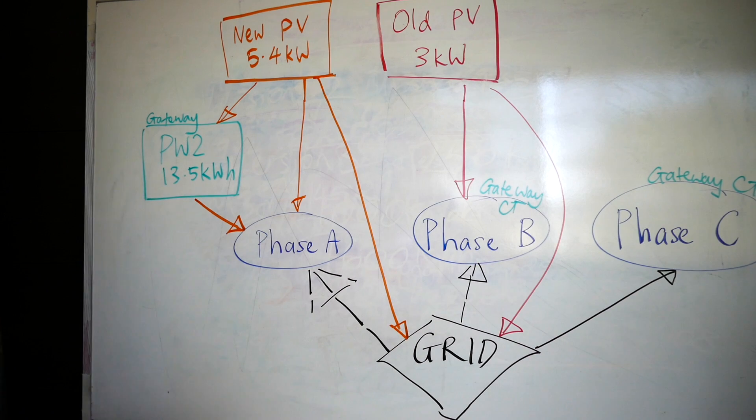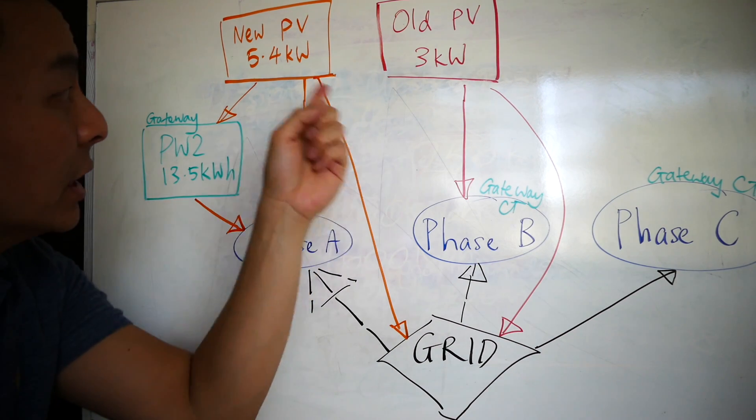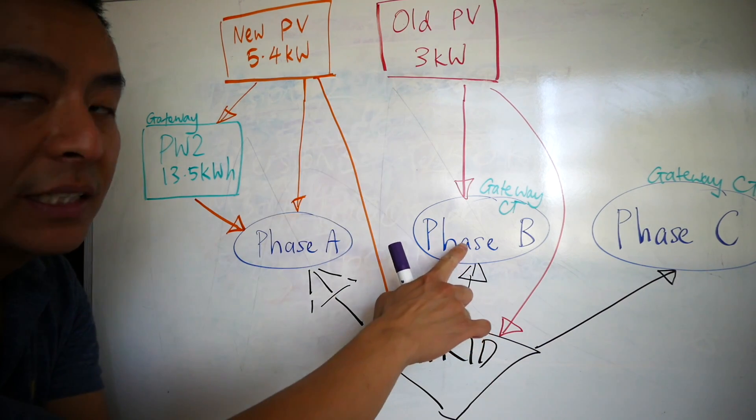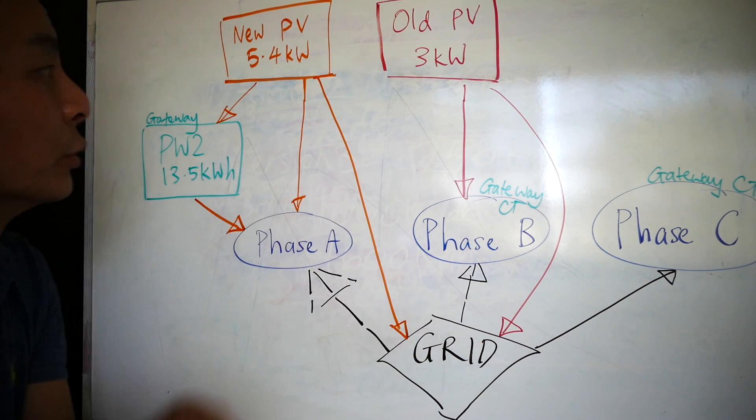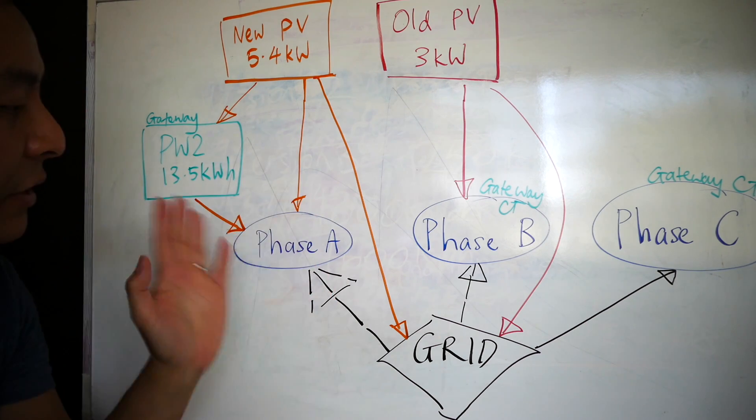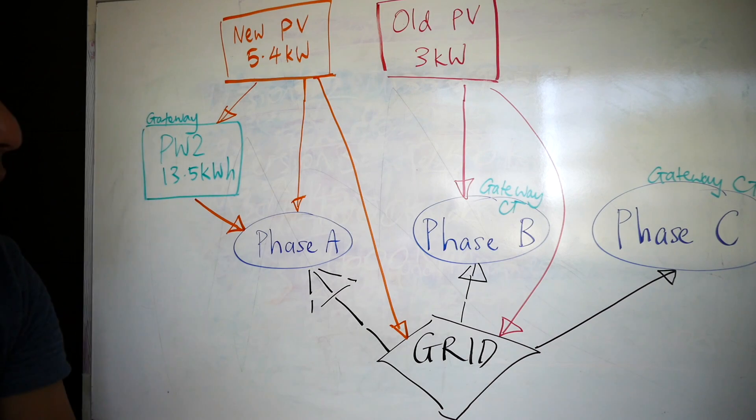I'm on three phase. I've got a Tesla Powerwall 2. I've got two sets of solar PV panels. My old PV panels are 3 kilowatts which are now on the B phase, and I've got a 5.4 kilowatt set of panels which I just installed last week. They're on the A phase, and C phase is empty.